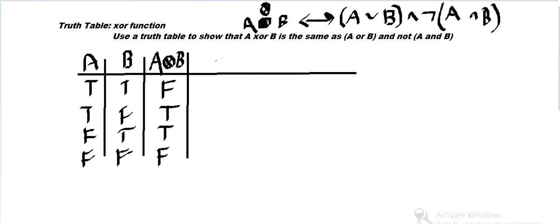And we want to show that this is the same as A or B and not A and B. So, let's see. We can look at what A or B is.